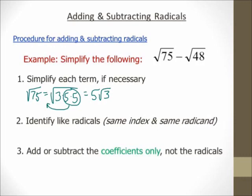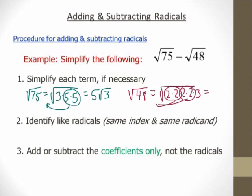For square root of 48, it looks like 2 times 2 times 2 times 2 times 3. My index is a 2, so I'm going to circle groups of 2 of the same thing. I bring one of each of those 2s out, ending up with 2 times 2, which is 4, square root of 3. Step number one is done.